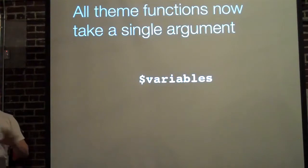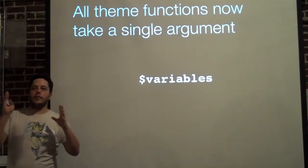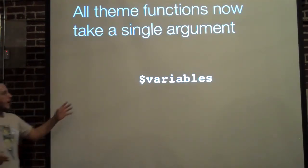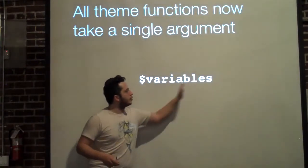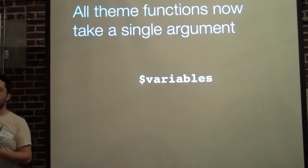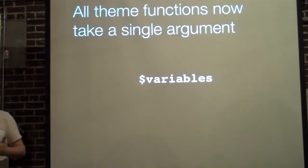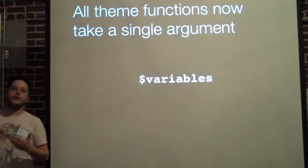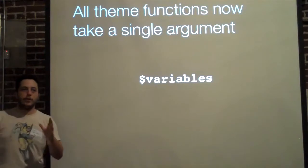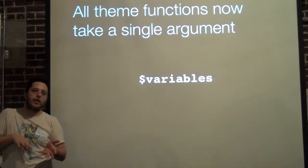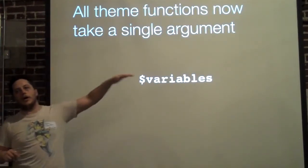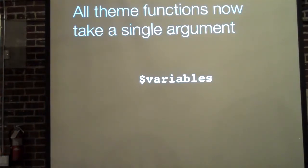New theme functions now take a single argument. Every theme function — theme_table, theme_link, theme_block, all that stuff — now has just one argument called variables. This means things are a little more complex inside the logic per theme function, but from a programmer standpoint it's much better, because now I don't have to look up the signature for every theme function I'm overriding. I know it's immediately just variables, and then I dig in to find out what those variables are.